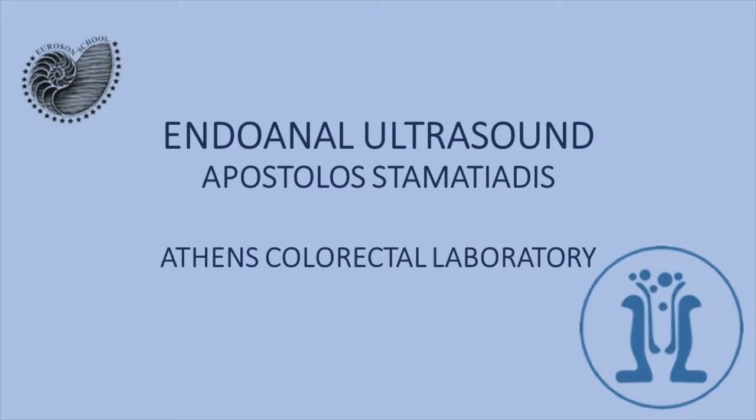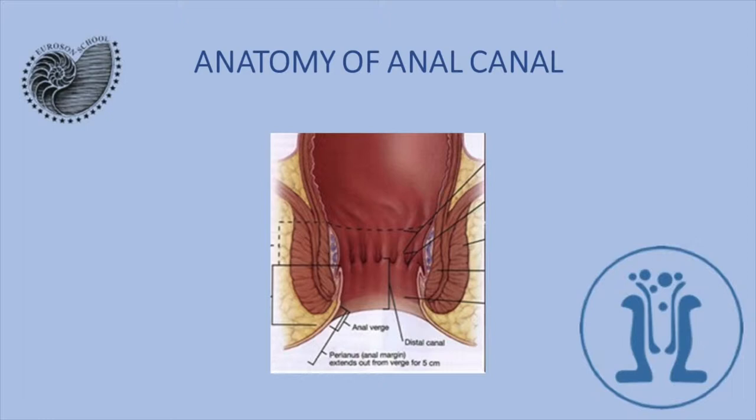Here we see the anatomy of the anus and of the anal sphincters. Here is the internal anal sphincter, it's the second layer around the anus, and this is the external anal sphincter. And this is the perianal and rectal fat, and here is the rectum, here are the sphincters, and here is the anal verge.